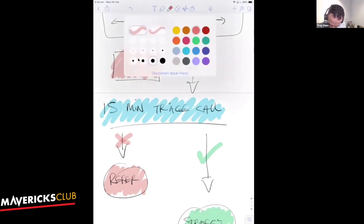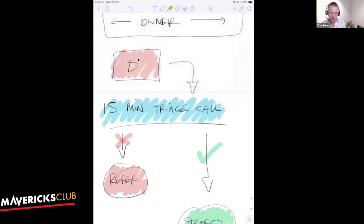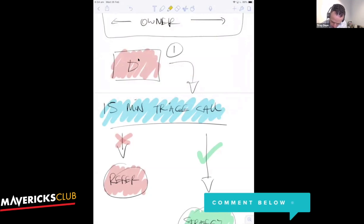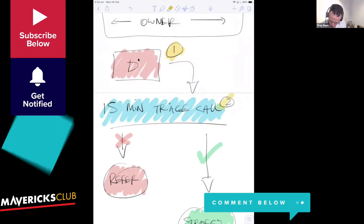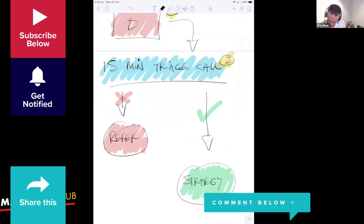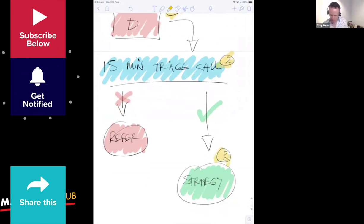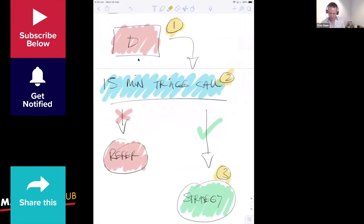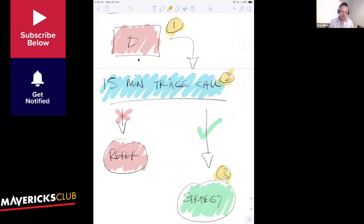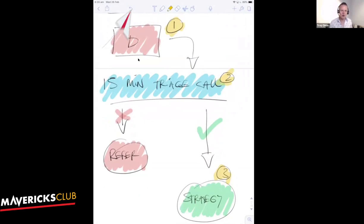So let's count—in a very short space of time, you've got one, two, three touchpoints. Three opportunities to do what? Three opportunities to build trust in a very short space of time. This is why funnels work.